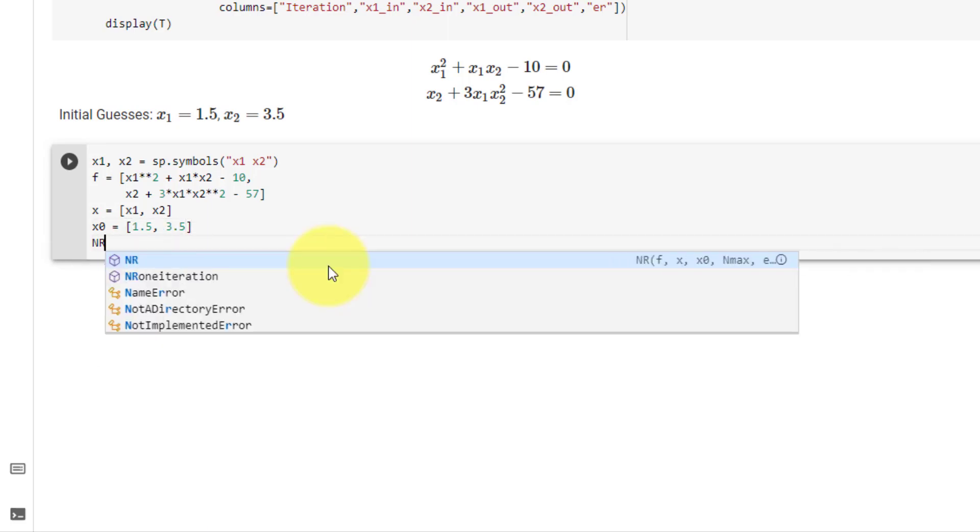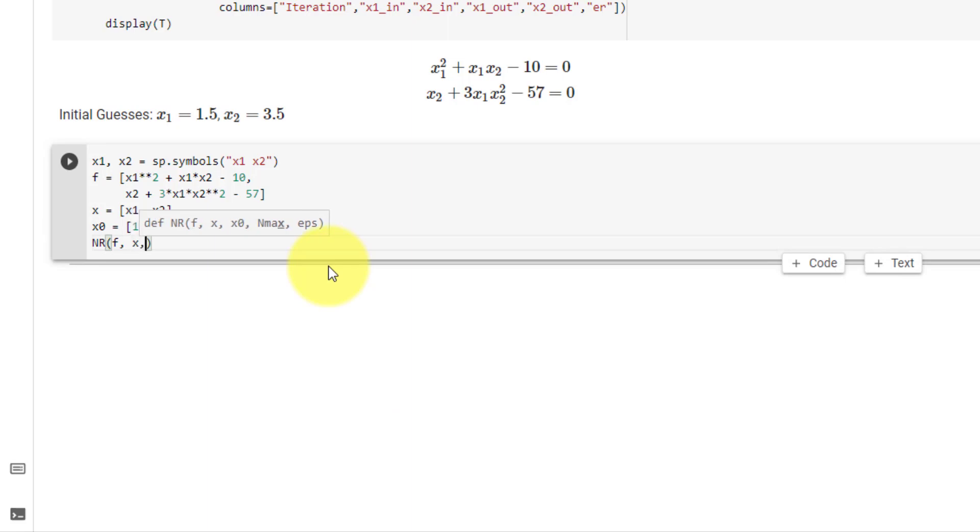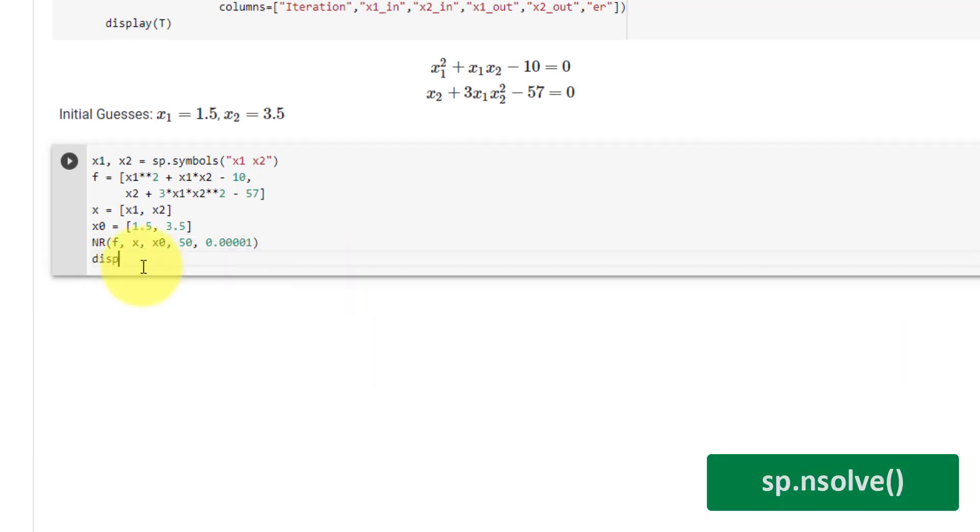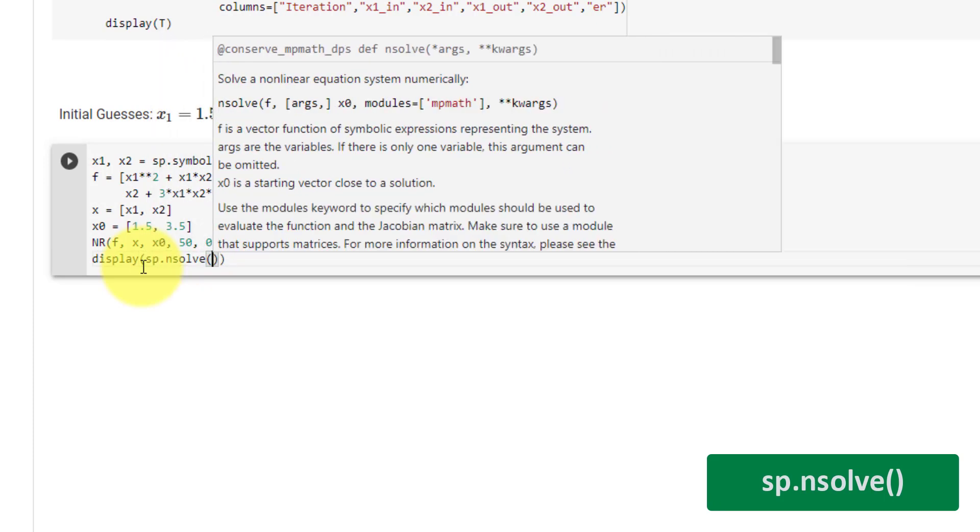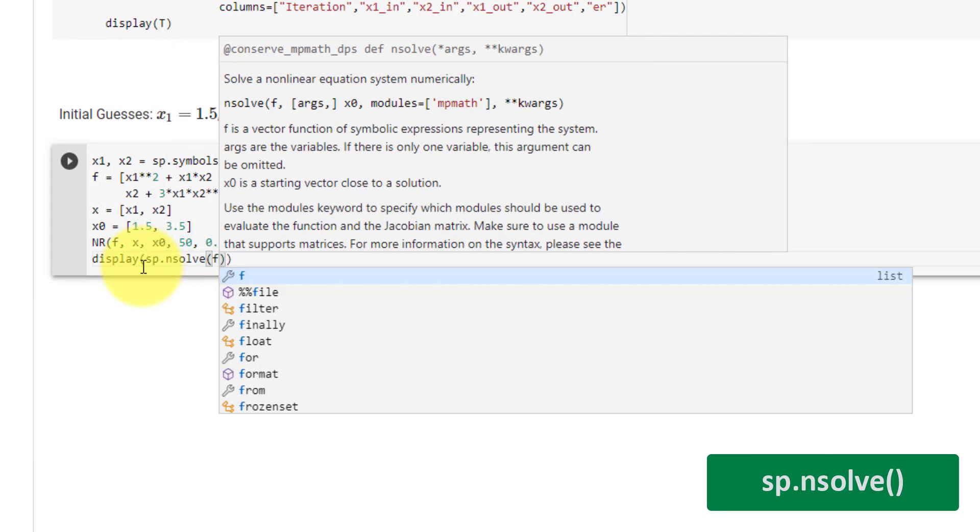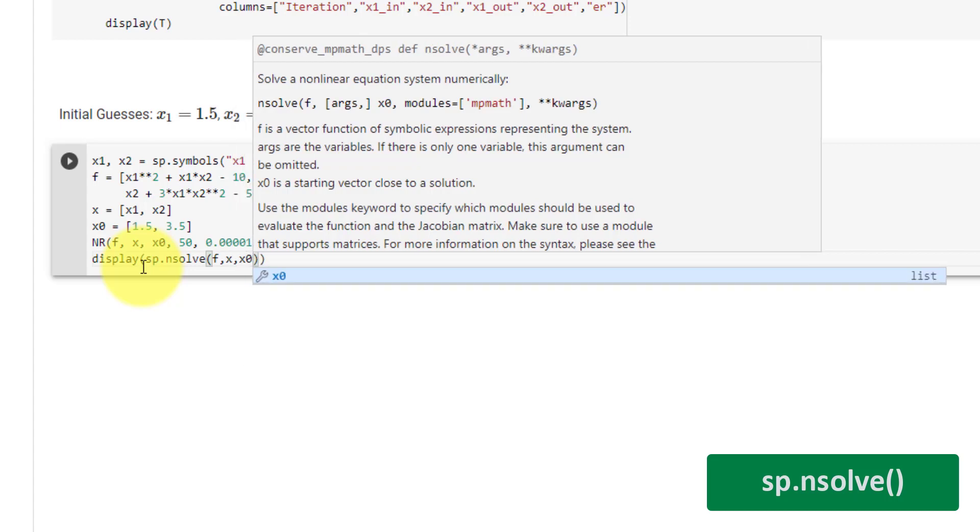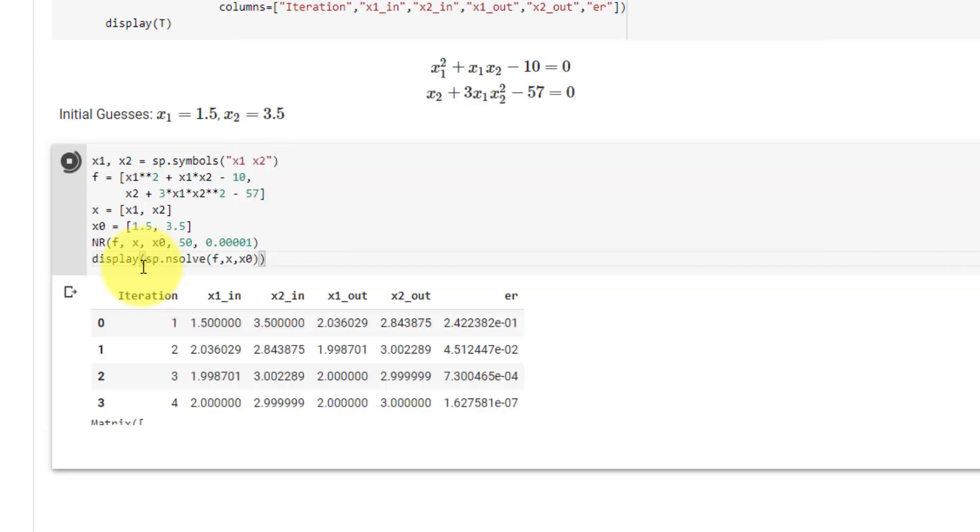Our x0 is our initial guesses, which is 1.5 and 3.5. Finally, you can call our function nr, pass in f, x, and x0. 50 for our maximum number of iterations, 0.001 for our stopping error. We will also compare our results with sympy's nsolve function, where we will pass in our f, x, and x0 list. Let's go ahead and run this. Here you can see we get 2 for x1 and 3 for x2, which is what we also got from nsolve.